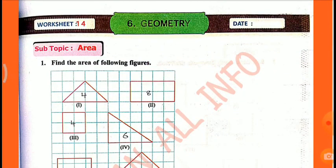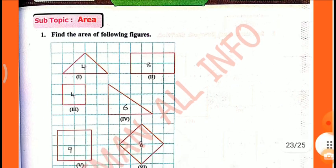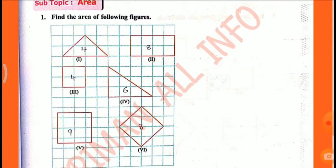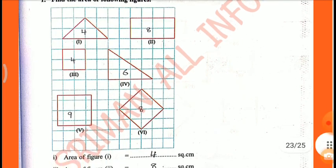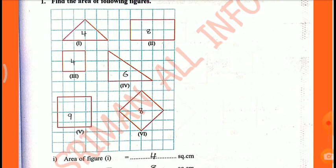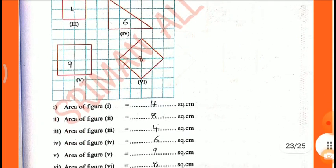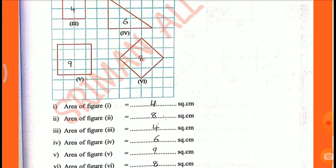Worksheet No. 14, subtopic: Area. Find the area of each figure. Area equals the number of boxes. Figure 1: 4 square cm. Figure 2: 8 square cm. Figure 3: 4 square cm. Figure 4: 6 square cm. Figure 5: 9 square cm. Figure 6: 8 square cm.